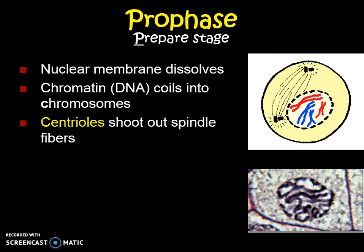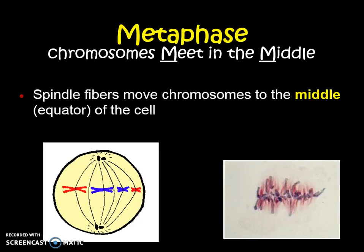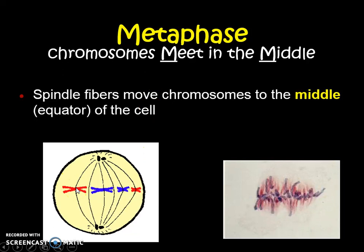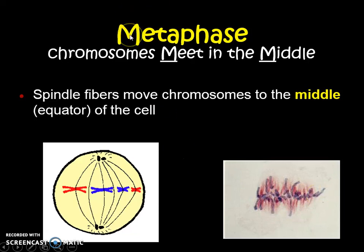Next comes metaphase, M. This is when the chromosomes meet in the middle. Remember those centrioles like Spider-Man sending out spidey webs — those spindle fibers move and attach right to the chromosomes. Just like Spider-Man can move things with his spider webs, the spindle fibers move the chromosomes until they're all lined up around the middle. We call the middle the equator because if this were the Earth, this would be the equator. In an actual cell it's a little messier, but they're all in the middle. If I see chromosomes in the middle, I know it's metaphase.